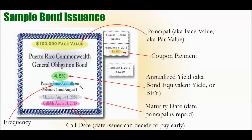The call date and the likelihood of a call is especially important to consider if you're buying a bond secondhand in the aftermarket, because you might not get the full interest rate you expected. To summarize the basics: you have the face value, the annualized interest rate, the payment frequency, and the coupon payment — how much you're getting paid in each interest payment. The sum of coupon payments in a year divided by the face value gives you your annualized yield. The maturity date is when your interest payments end and you get your face value back, and the call date is when the bond issuer has the option of paying off the bond early.